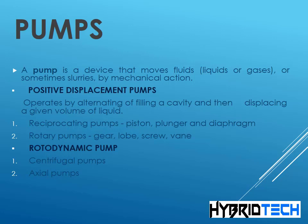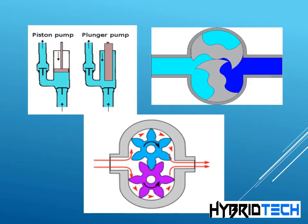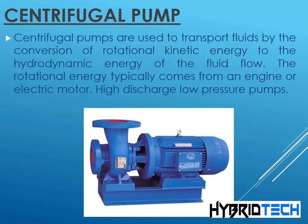Types of pumps include reciprocating pumps (piston, plunger, and diaphragm), rotary pumps (gear, lobe, screw, vane, rotor), and dynamic pumps such as centrifugal pumps. Centrifugal pumps are used to transport fluids by the conversion of rotational kinetic energy to the hydrodynamic energy of the fluid flow. The rotational energy typically comes from an engine or electric motor. These are high discharge, low pressure pumps.